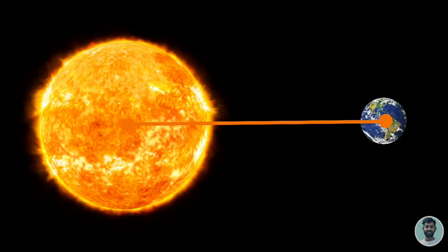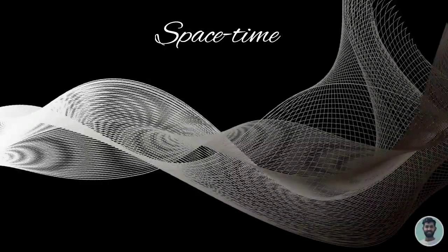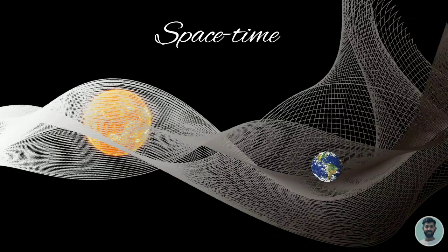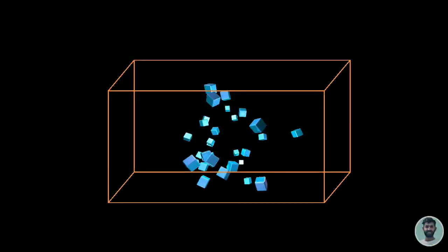So now let's understand another thing that is space time. Space time is like a fabric in which all the things in the universe exist. And it sounds to be obvious also because if there is something which exists then it must exist somewhere.